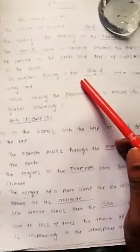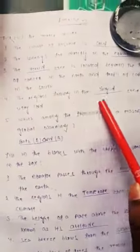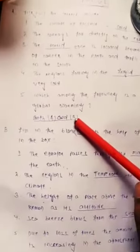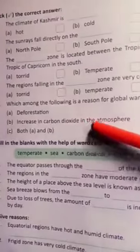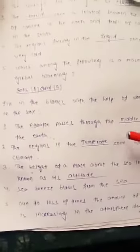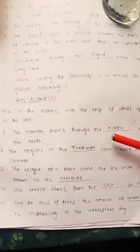And the regions falling in the frigid zone are very cold. Which among the following is a reason for global warming? The answer is deforestation and increase in carbon dioxide in the atmosphere. Both are the reasons for global warming.